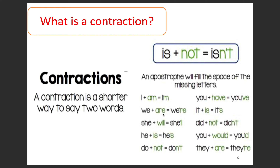We and are becomes we're. She and will becomes she'll. He and is becomes he's. Do and not becomes don't. Take a look at these ones and see if you can read them out loud to yourself and figure out what the contraction will be — they're already listed here for you, so if you can't guess it on your own, you have the answers over here.